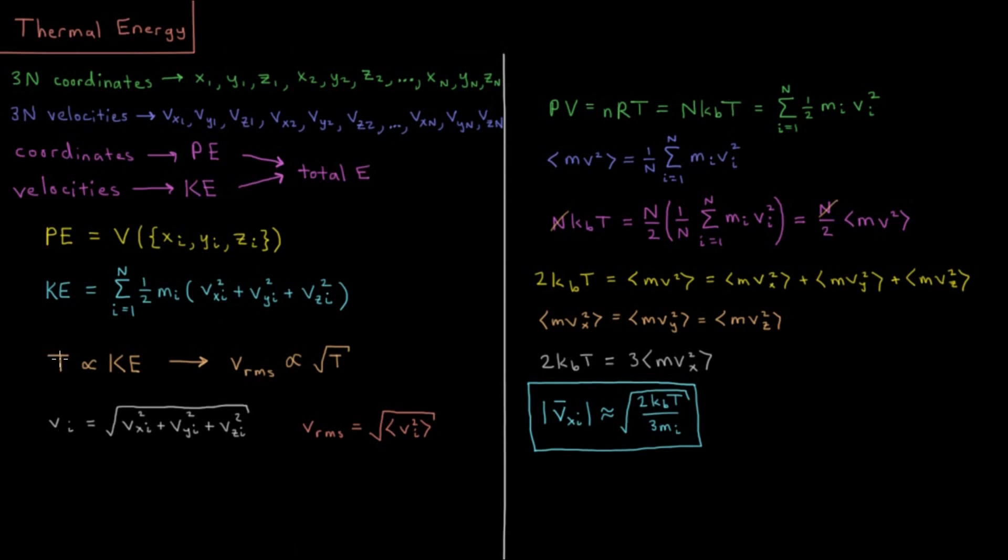For an ideal gas particle, the temperature is directly proportional to the kinetic energy of our system. And the kinetic energy is related to the velocity squared. So the square root of this, or the average value of this, would be what we call the root mean squared velocity. And that value is proportional to the square root of our temperature.